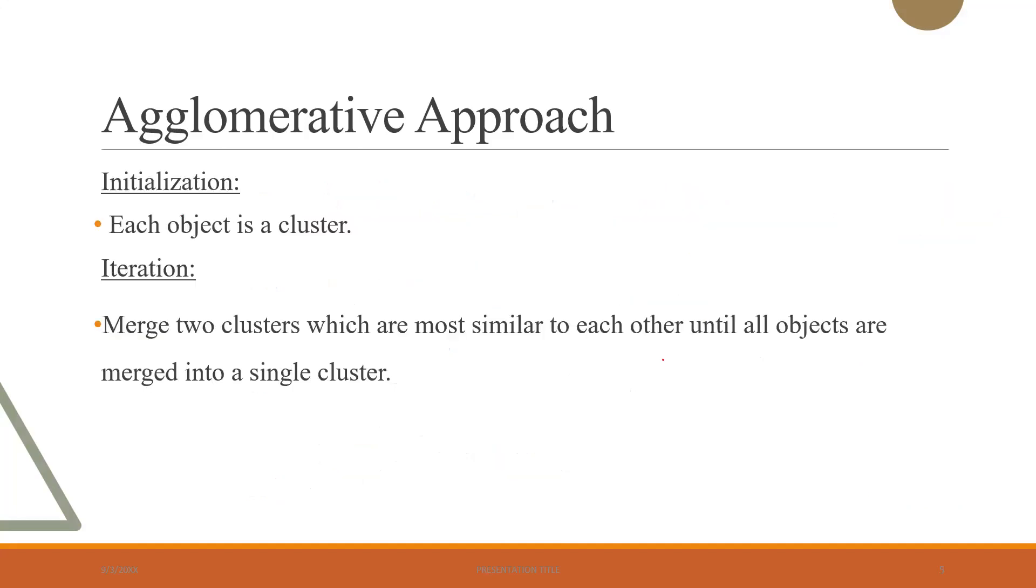The same is written in words here. At the start, each object is a cluster, and from then, we merge two clusters which are most similar to each other until all objects are merged into a single cluster. The basic criteria which says two clusters are similar can be either Euclidean distance or the similarity measure.